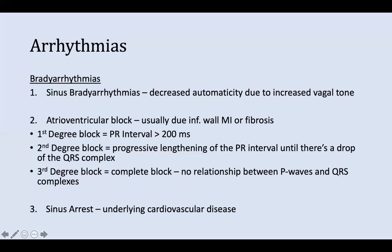Number two is atrioventricular block, usually due to an inferior wall myocardial infarction or fibrosis. There are three types of AV blocks. First degree AV block is when the PR interval exceeds more than 200 milliseconds — that's an important number to remember. Second degree AV block is a progressive lengthening of the PR interval until there's a drop of the QRS complex. Third degree heart block is a complete block with no relationship whatsoever between the P waves and QRS complexes.